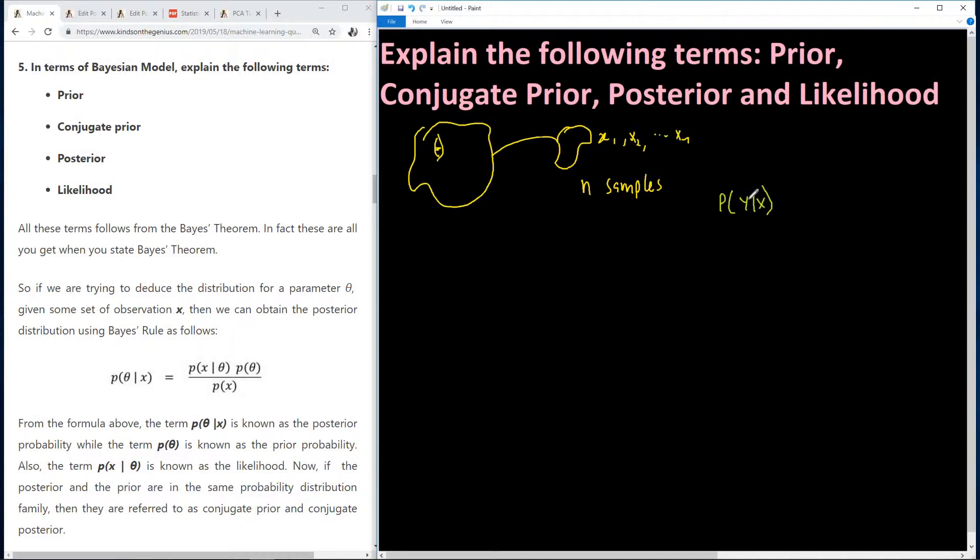Learn how to state this theorem offhand. So just learn it, even if it means memorizing it. Memorize it, because it's going to help you a lot in your machine learning and also data science. So we have P of x given y times P of y all over P of x.